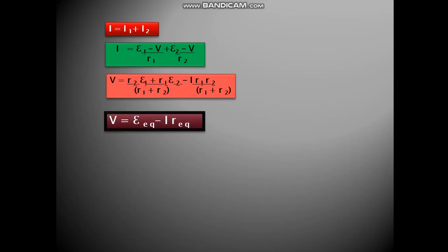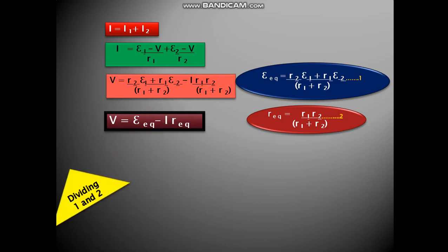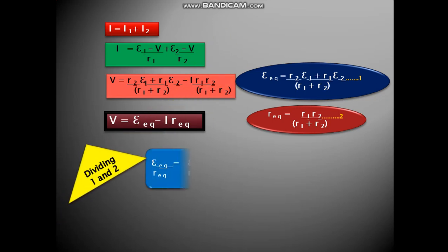So we can write V is equal to Eequivalent minus I Requivalent. And Eequivalent is equal to R2 E1 plus R1 E2 upon R1 plus R2. Requivalent from the equation is R1 R2 upon R1 plus R2. So from equations 1 and 2, we divide them and we get Eequivalent upon Requivalent is E1 upon R1 plus E2 upon R2.